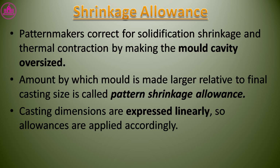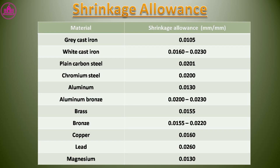Shrinkage allowance: pattern makers correct for solidification shrinkage and thermal contraction by making the mold cavity oversized. The amount by which the mold is made larger relative to the final casting size is called the pattern shrinkage allowance. Casting dimensions are expressed linearly, so allowances are applied accordingly.